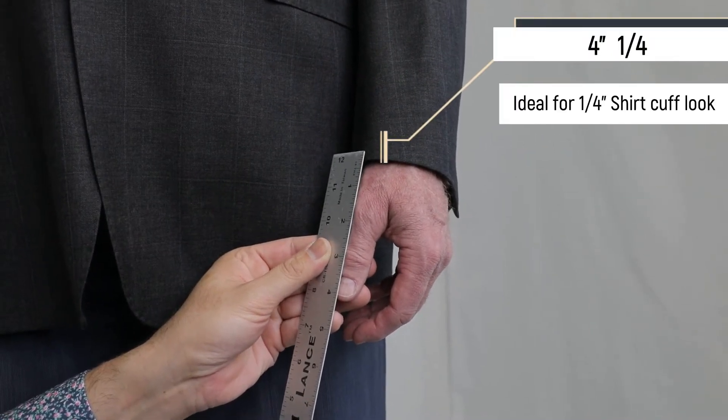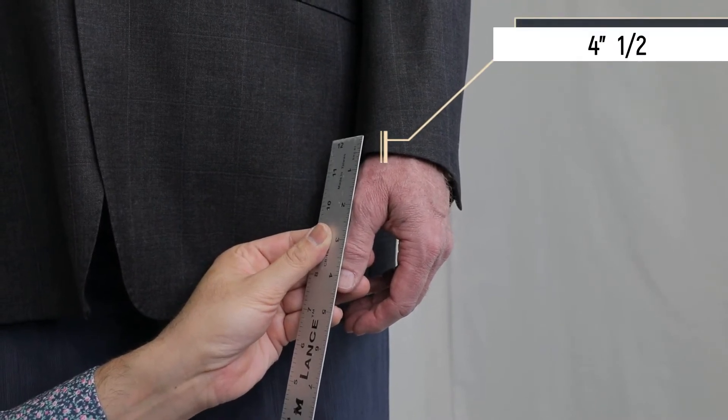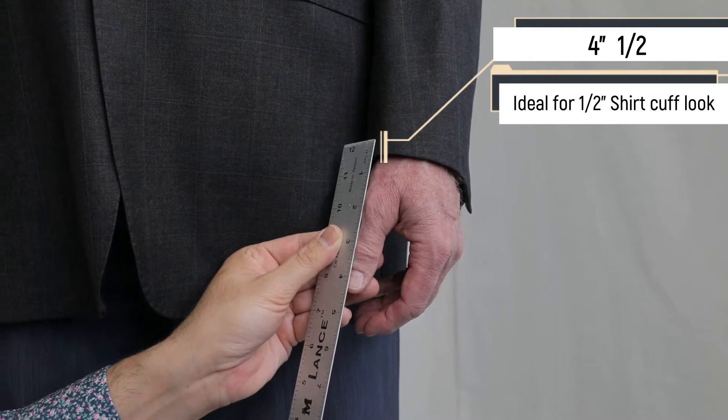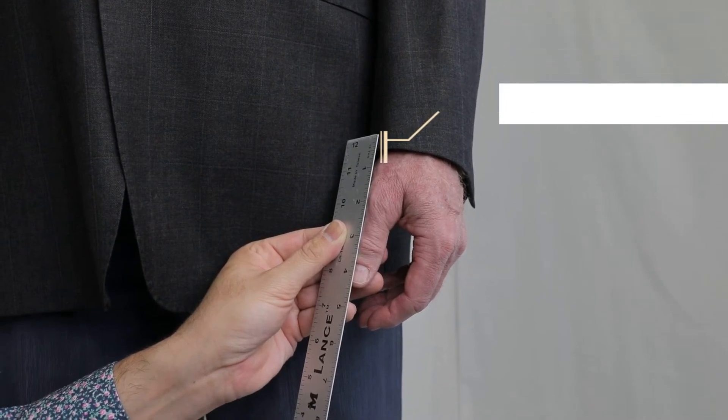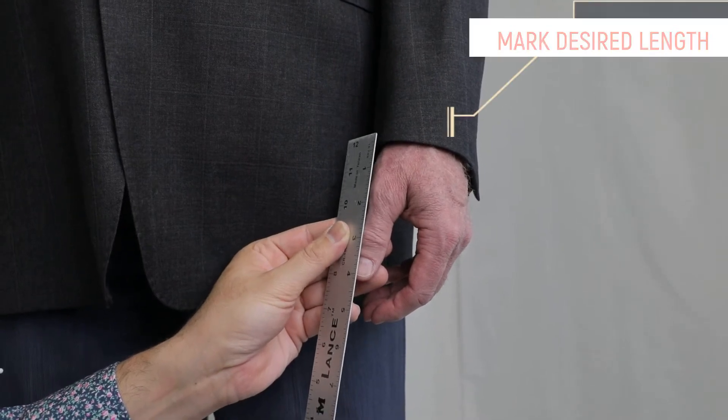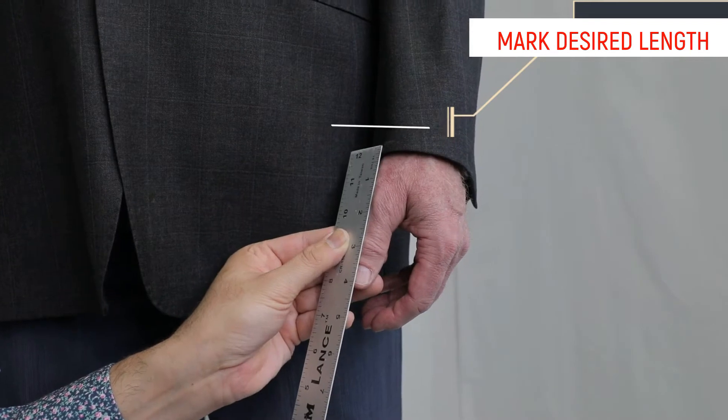Four and a quarter inches from the thumb up is for a little shirt cuff look. If you measure four and a half inches from the thumb up, it will show more - a half inch shirt cuff. Depending on what your customer likes, once you choose your desired length, please mark or pin it.